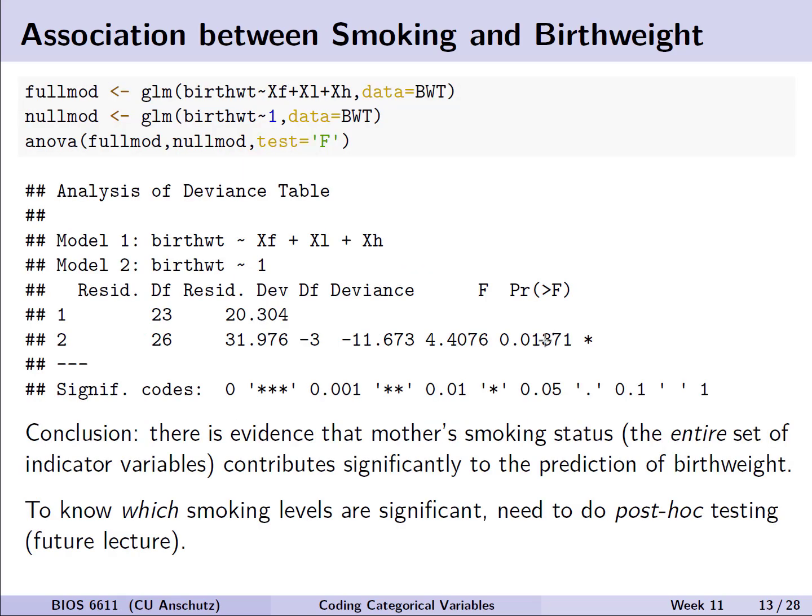We see the association between smoking and birth weight, using non-smokers as our reference category, and we can compare that with the overall F-test to a null model that doesn't include any predictors. Looking at the F-statistic and corresponding p-value, it's less than 0.05, so there is evidence that mother's smoking status — the entire set of indicator variables — contributes significantly to our prediction of birth weight. A follow-up question of interest is which smoking levels are significantly different, and to address this we would need to do post-hoc testing, which is discussed in a future lecture.